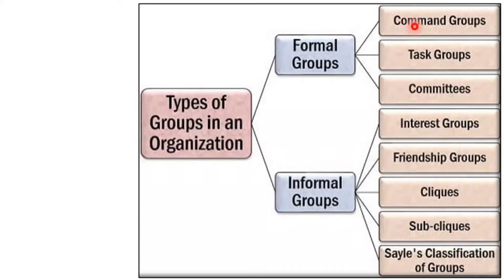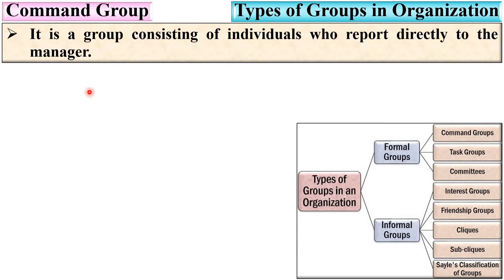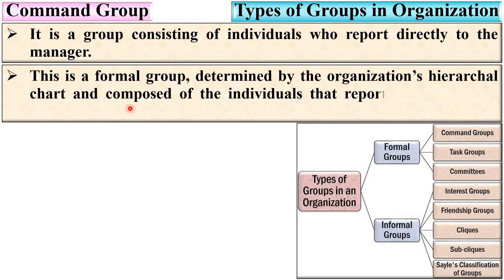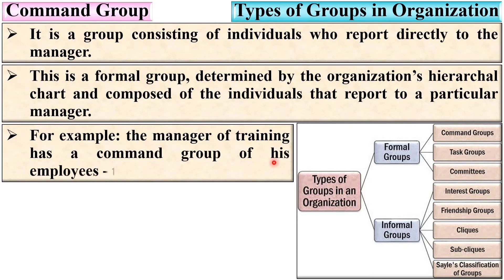Now let us see one by one the different groups considered under formal groups, starting with the command group. It is a group consisting of individuals who report directly to the manager. This is a formal group determined by the organization's hierarchical chart and composed of individuals that report to a particular manager. For example, the manager of training has a command group of his employees, called the training group.